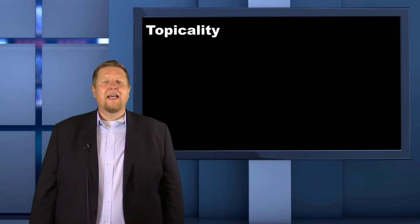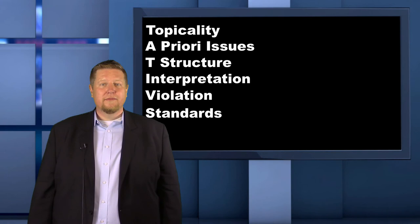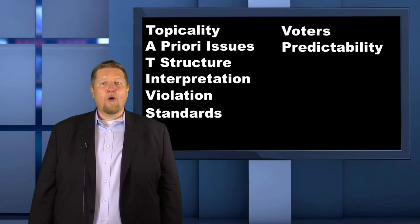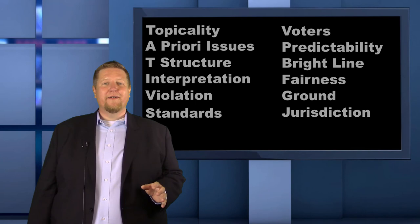Okay, that's a lot of talk about topicality. By now you should understand the role that topicality plays in a debate round. Make sure you review the major terms and rewind the video to watch any portions you didn't understand. Key terms to review: topicality, a priori issues, the structure of a topicality argument, interpretation, violation, standards, voting issues or voters, predictability, bright line, fairness, ground, and jurisdiction. Make sure to watch the other topicality videos in this series for more information on other types of topicality arguments you can run as the negative team and how to answer topicality as the affirmative team. Good luck, debaters.